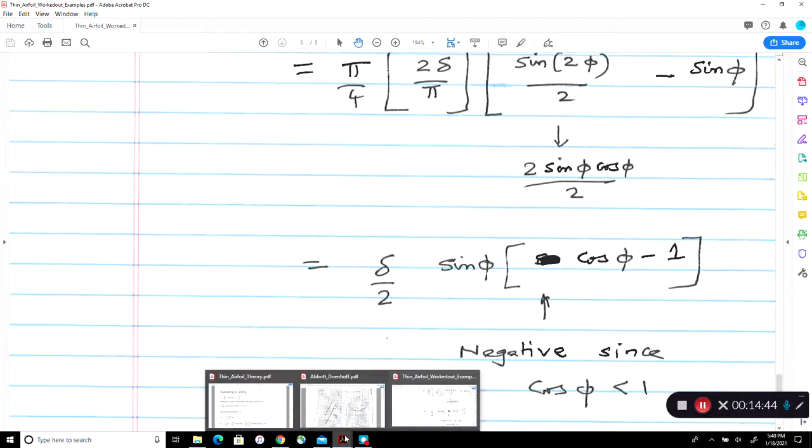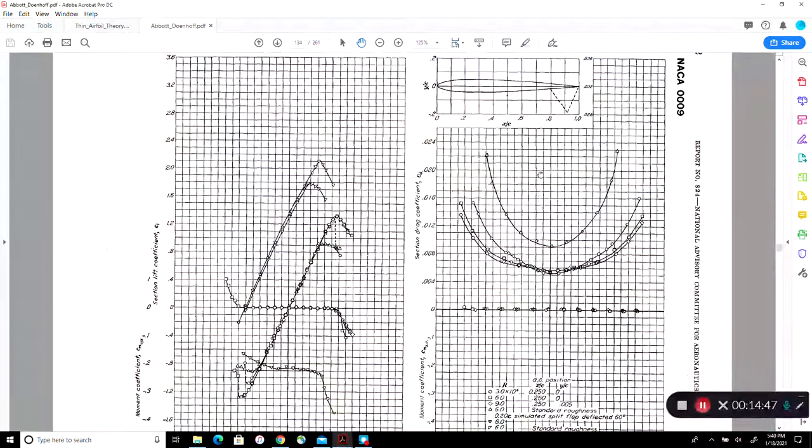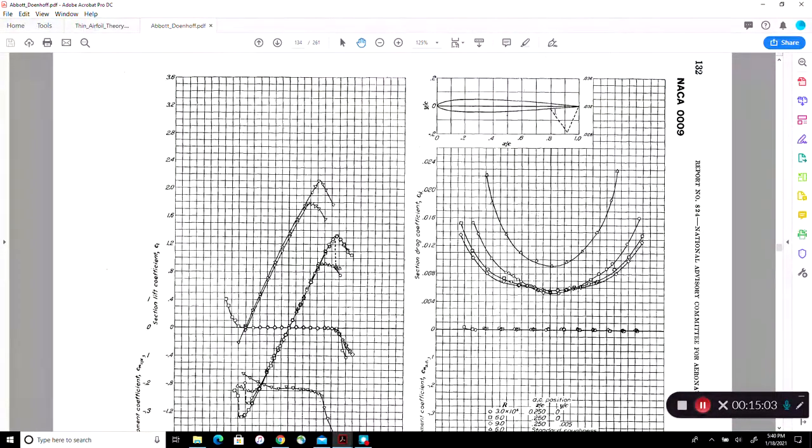So going back to our Abbott and Doinhoff book, the more you deflect that flap, the more negative this number will become. If you have a zero deflection flap, you get zero lift for a symmetric aerofoil. The more you deflect, the more the lift you get. So deflecting the flap produces lift. This is why an airplane, when it takes off and lands, it uses high lift systems to produce excess lift. You could also deflect the nose part of it, which is the slat. Then you have a highly cambered surface. Then you get lots of lift during takeoff and landing.